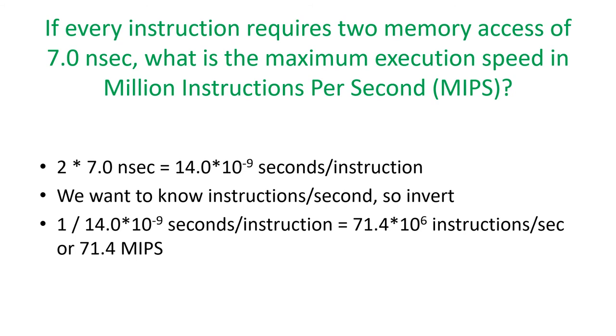It requires 2 memory accesses of 7 nanoseconds. So if there's 2 instructions at 7 nanoseconds per instruction, we get 14 nanoseconds per instruction. We want instructions per second, so we invert 14 times 10 to the negative 9th seconds and get 71.4 times 10 to the 6th instructions per second. That's 7.14 million instructions per second, or MIPS. MIPS used to be a very common measurement of performance, although it isn't particularly accurate.